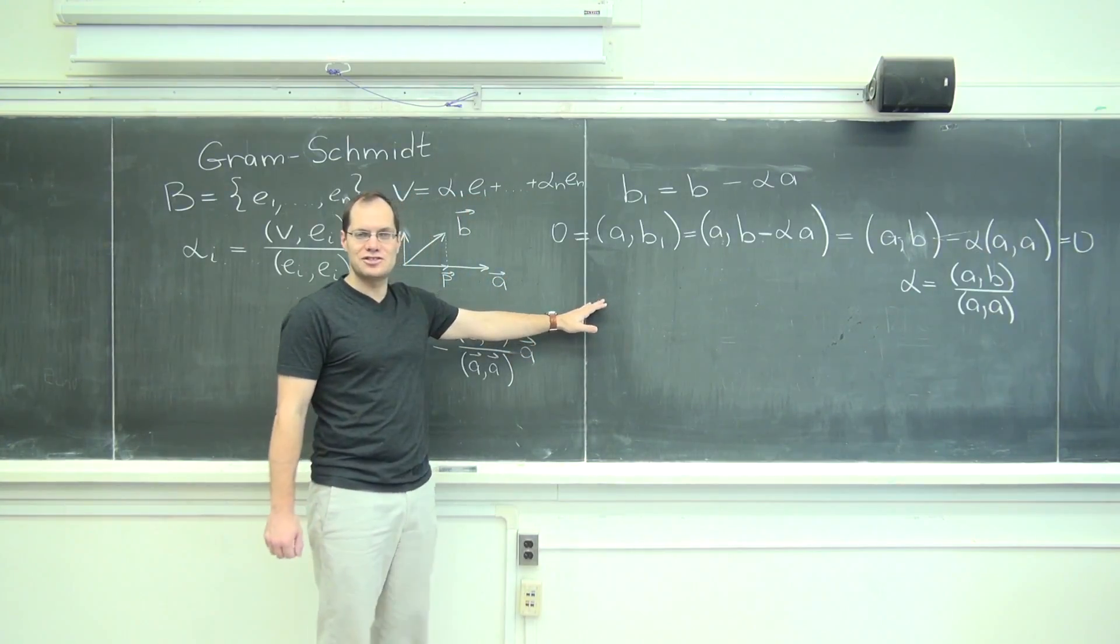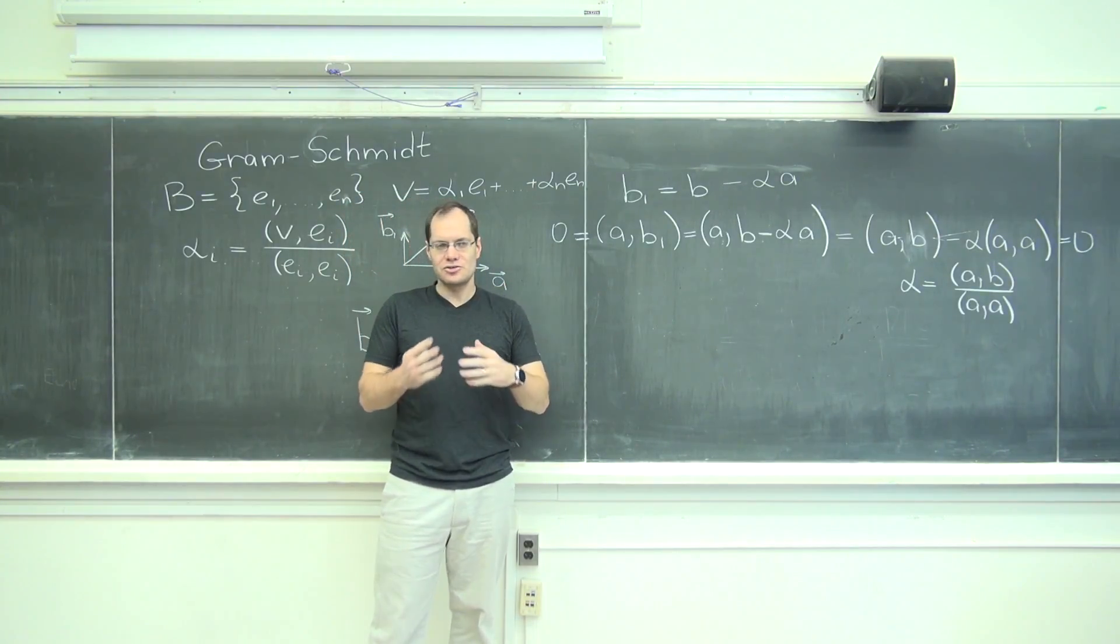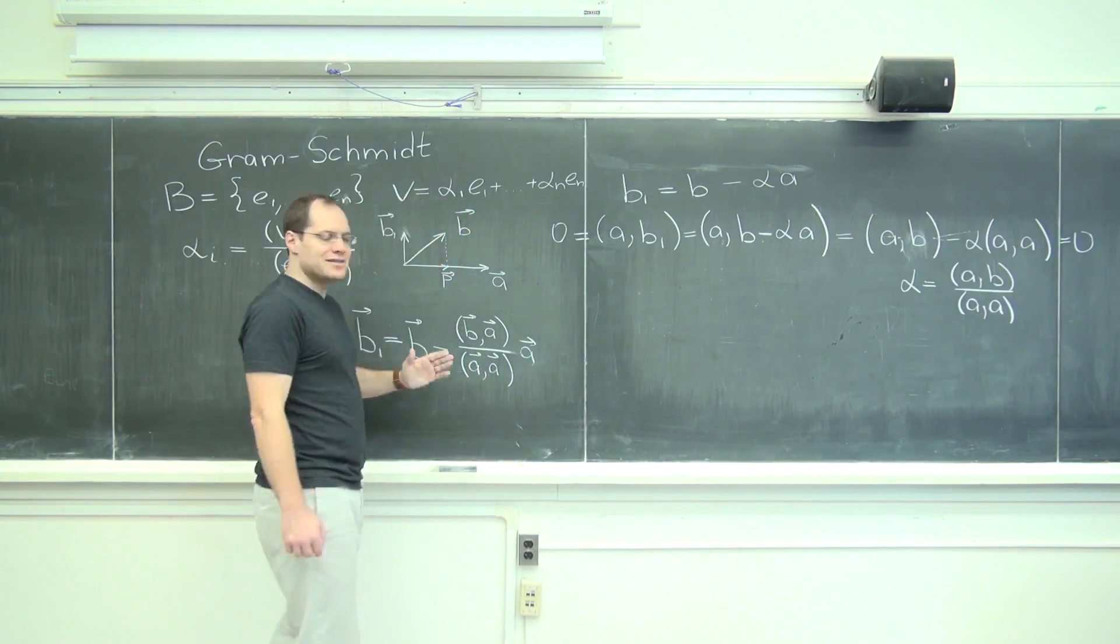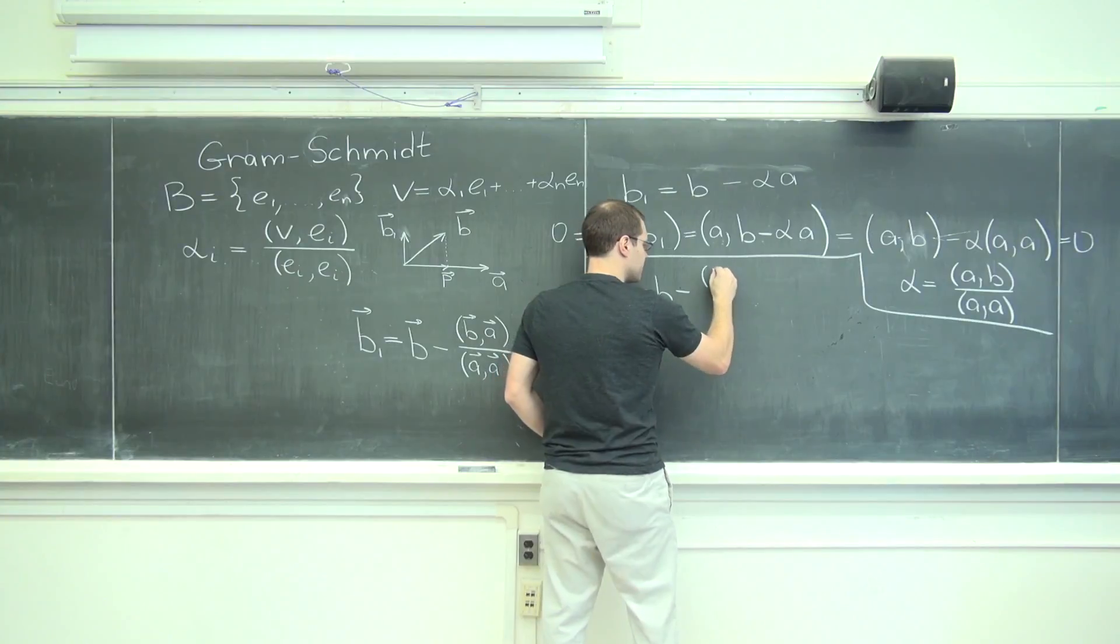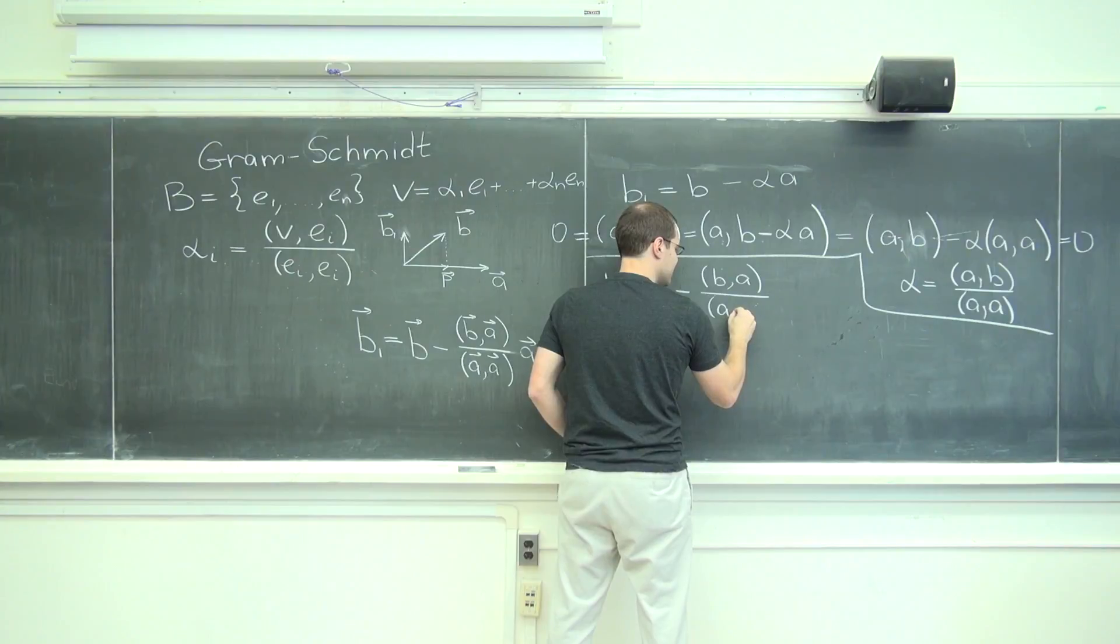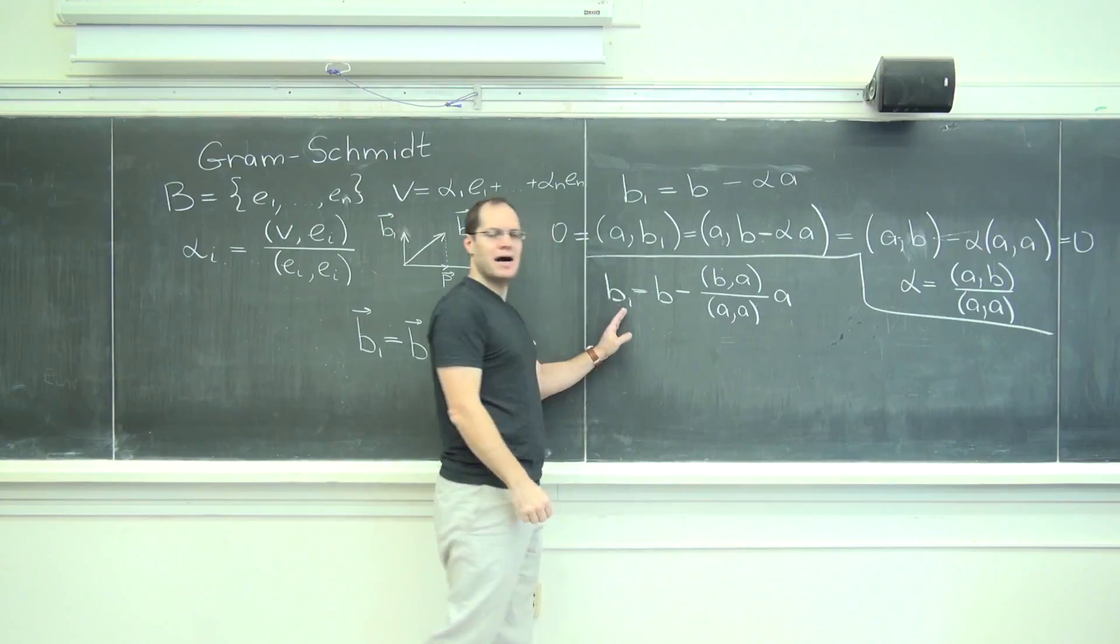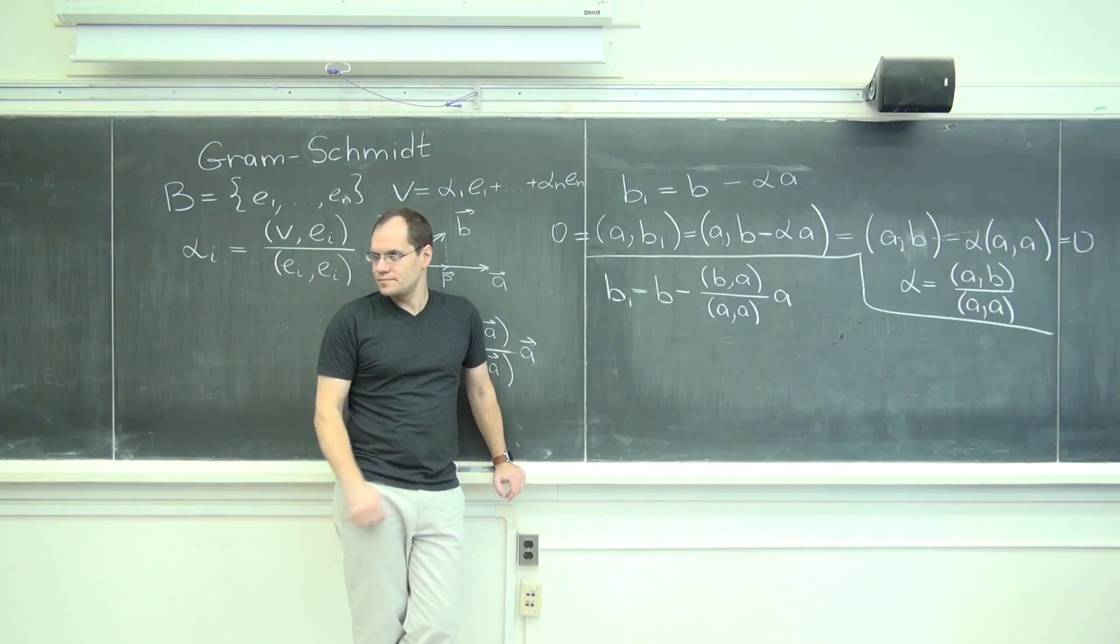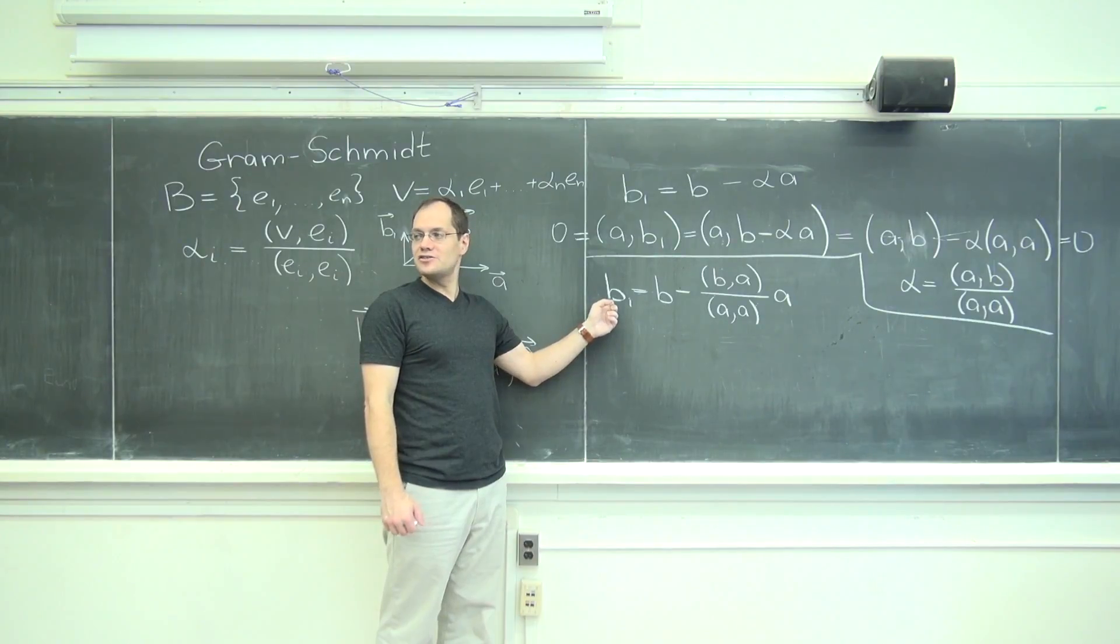Okay, let me belabor this just a little bit more, partly just to get you used to the notation and to get you used to dabbling in the inner product. How about I just postulate that b1 equals b minus b dotted with a divided by a dotted with a, times a. If I just postulated that that's what b1 is and just ask you confirm that this is orthogonal to a. Once again, algebraically.